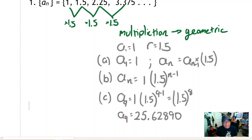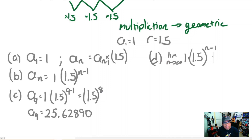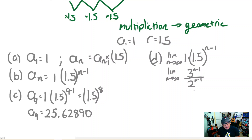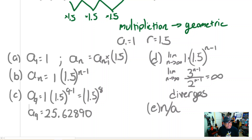Part (c) says to find the ninth term. Using the explicit formula, we get 1 multiplied by 1.5 to the (9−1) power, which is 1.5 to the eighth power, and that evaluates to 25.6289. For part (d), we take the limit of the general term as n approaches infinity. Simplifying as 3^(n−1) over 2^(n−1), since the base of the numerator is greater than the base of the denominator, this limit goes to infinity — the sequence diverges and there is no limit.